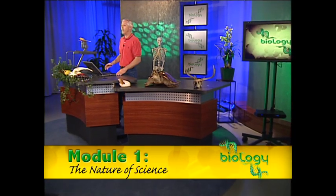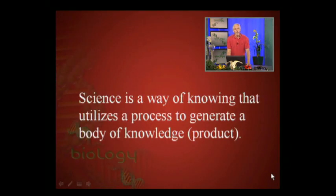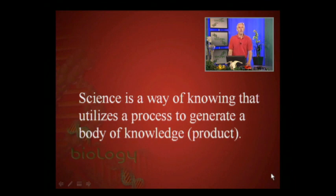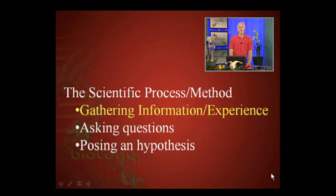Given that biology is a type of science, that's really where I'd like to begin with the course. Let's look at the nature of science and the characteristics of good science and bad science. Science ultimately has a dual nature to it — it is a way of knowing that utilizes a process to generate a body of knowledge, and that body of knowledge is the product of science.